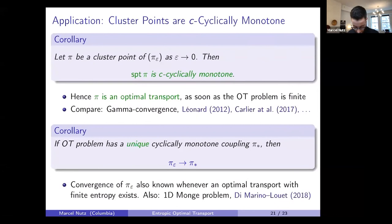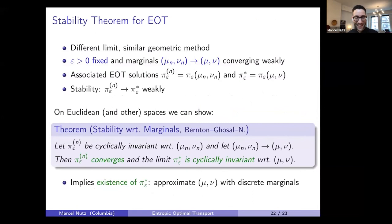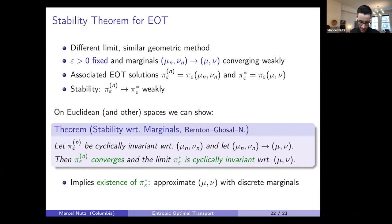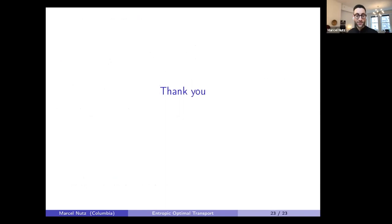A further result, proved by similar arguments with epsilon fixed: if the marginals converge weakly, the associated EOT solutions converge as well. More generally, stated in purely geometric terms using cyclical invariance: limits of cyclically invariant couplings are cyclically invariant. This gives stability of the EOT optimizers with respect to the marginals.